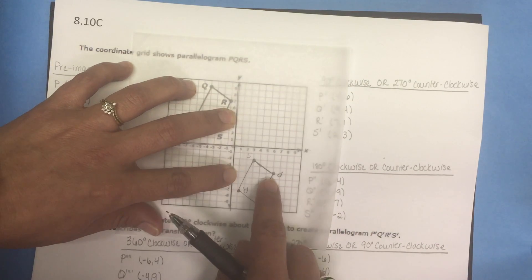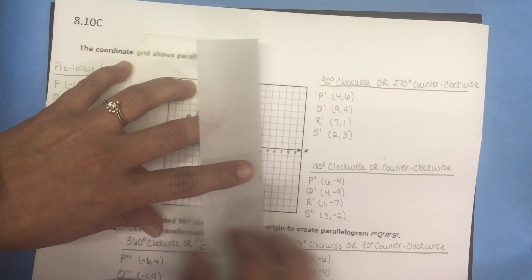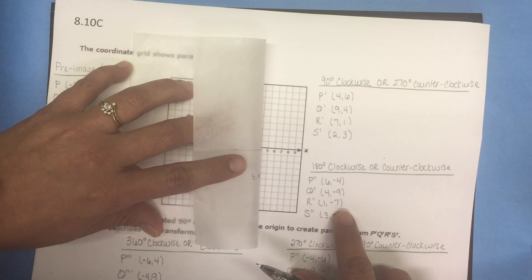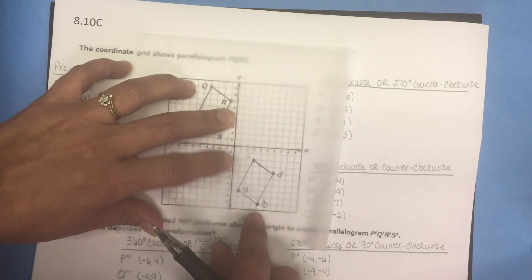Okay, so here it is and I've listed the coordinates of that figure here. P would be (6, -4), Q (4, -9), R (1, -7), S (3, -2).